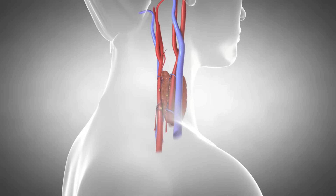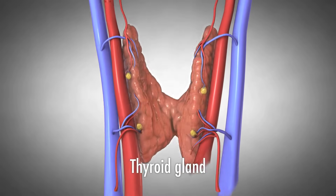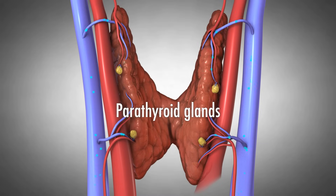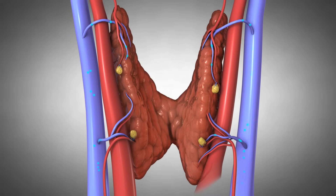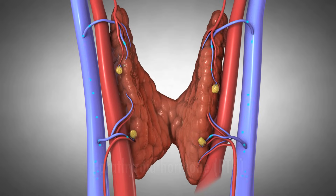There are four parathyroid glands located behind the thyroid gland. Parathyroid glands monitor and control the amount of calcium in our blood and bones by secreting a hormone called parathyroid hormone or PTH. Each gland monitors the blood calcium and responds by making more or less PTH hormone.